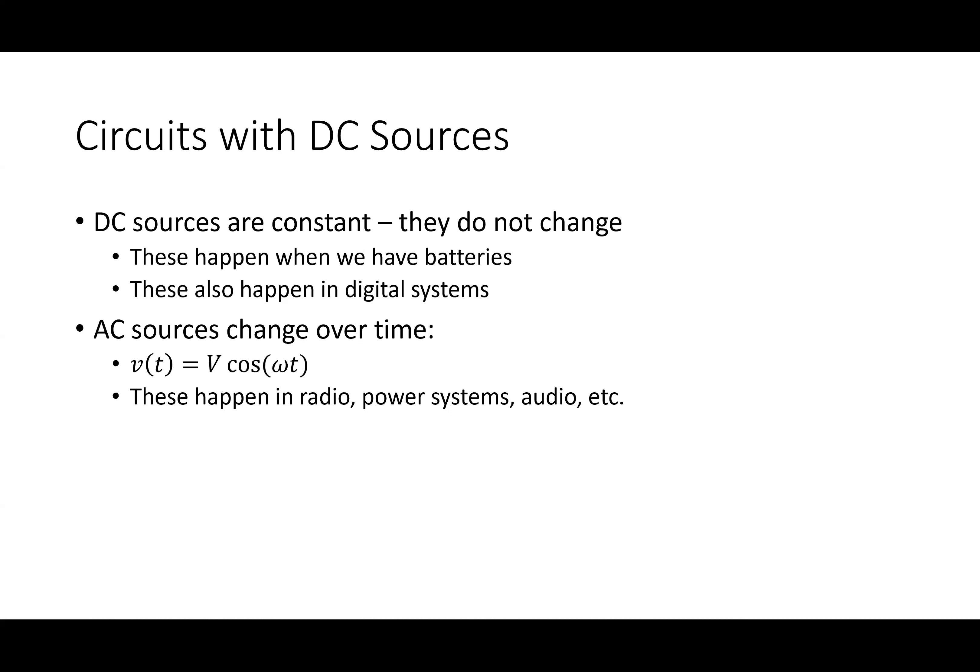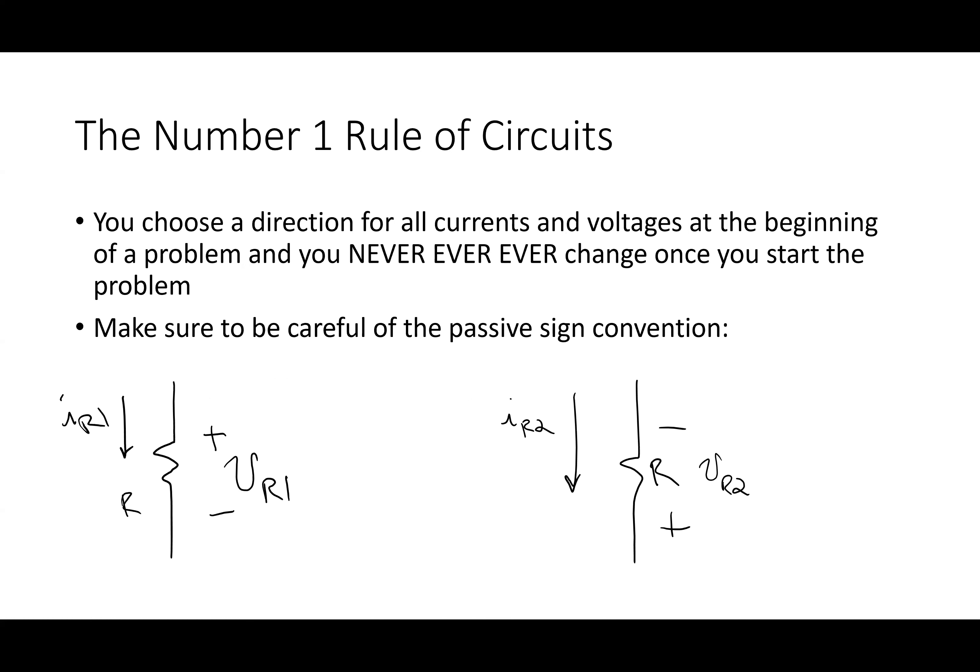For digital systems, if you're a computer engineer, DC is really all you have to deal with — basically five-volt sources, 3.3-volt sources, 1.8-volt sources; they're constants. DC circuits are pretty uninteresting in general because not a whole lot can happen to them. But at the very end of Circuits 1, you learned about capacitors and inductors.